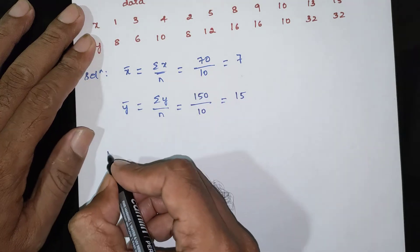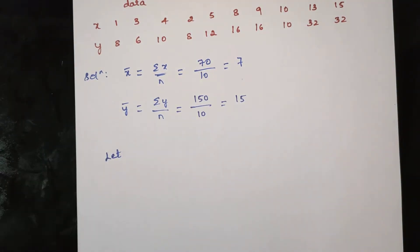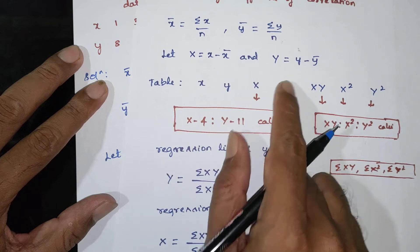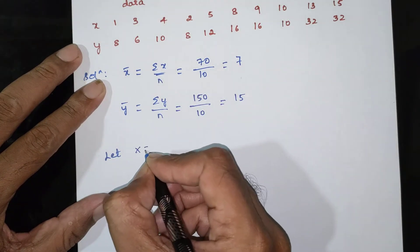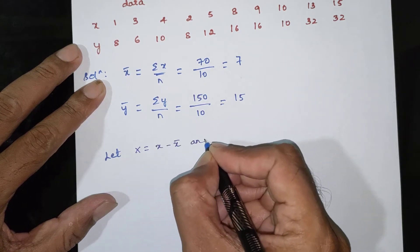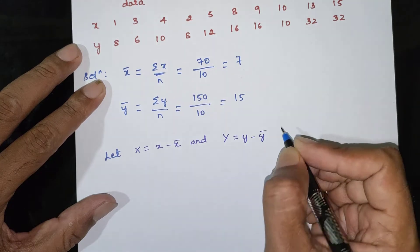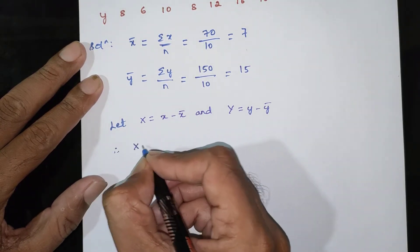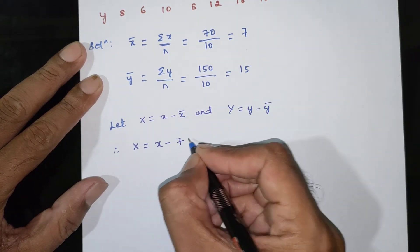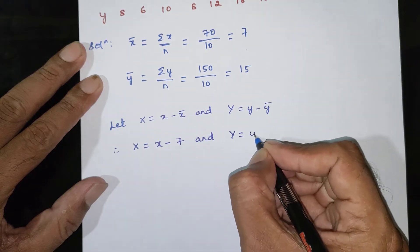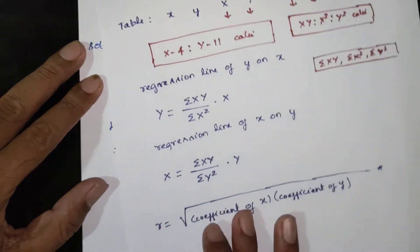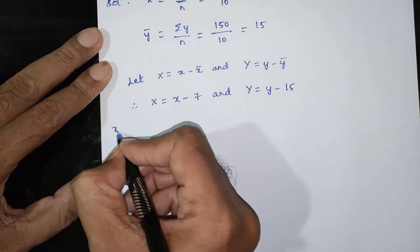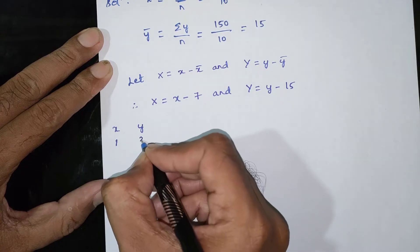Now x̄ = 7 and ȳ = 15. Let capital X = x minus x̄ = x minus 7, and capital Y = y minus ȳ = y minus 15. We will now find these values and build the table.